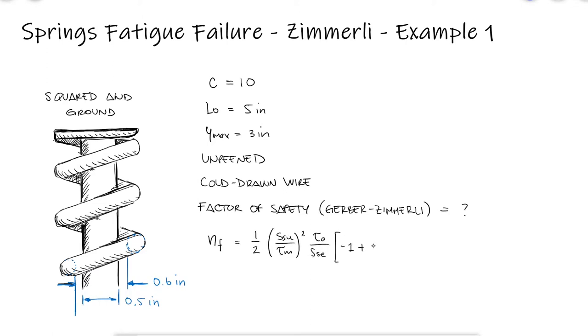If we look at the Gerber factor of safety expression, we see that we need the torsional modulus of rupture, the shearing endurance strength, and the mean and alternating torsional shearing stresses.